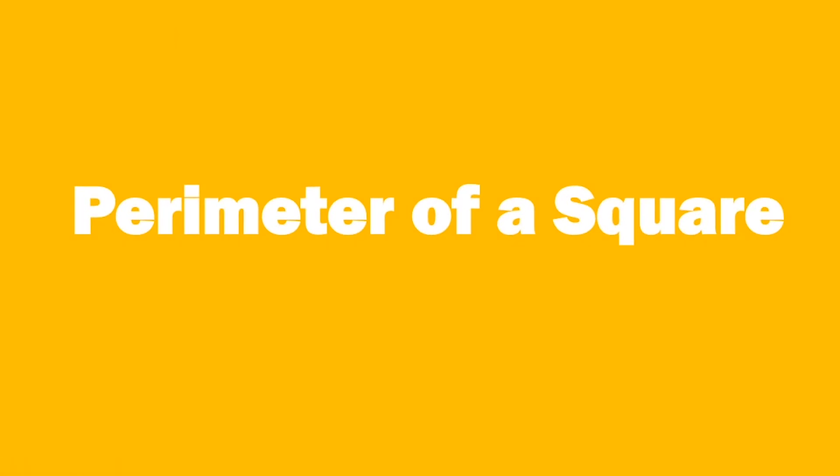Welcome students, let us continue with the topic area and its boundary. In the last topic we have seen area of a rectangle, so today we will see parameter of a square. Can you tell me how many sides a square has? Basically a square has four sides, wherein all the sides are equal. So we start with the topic: parameter of a square.